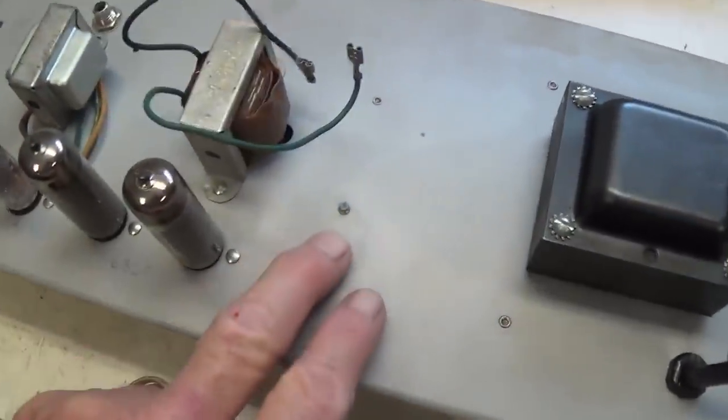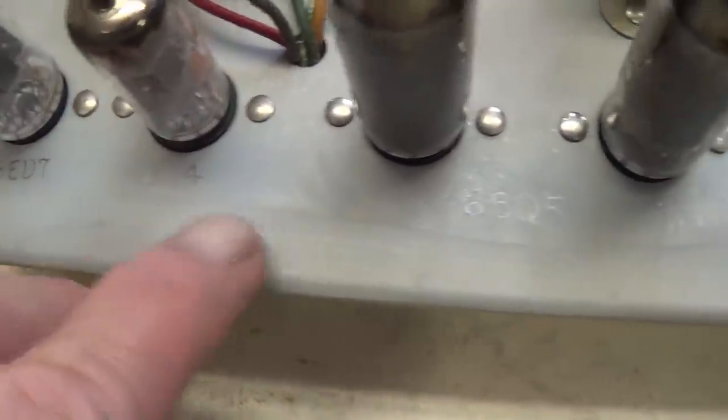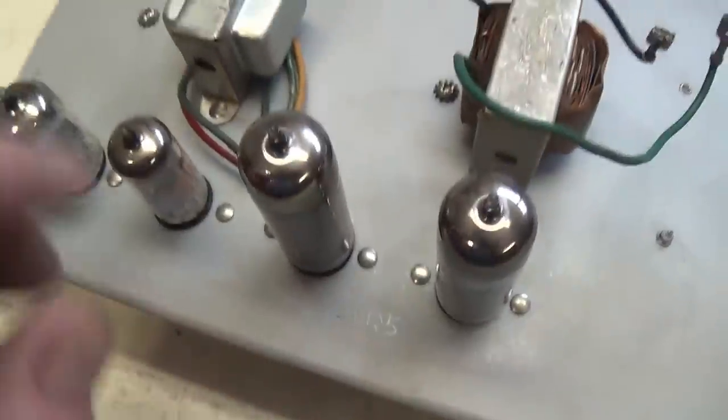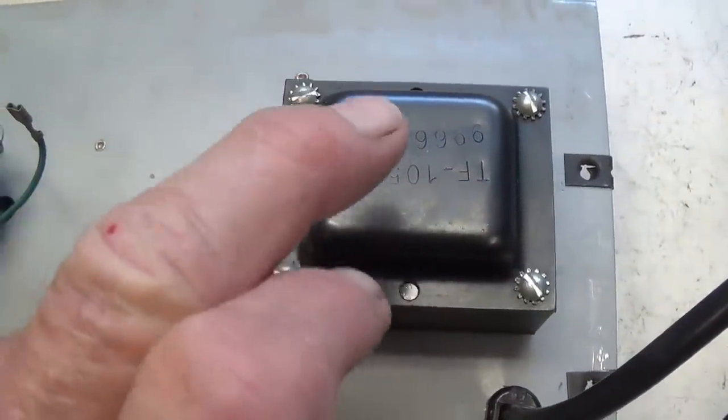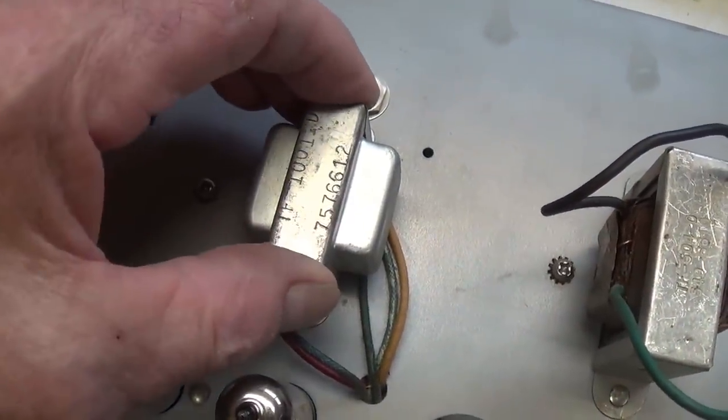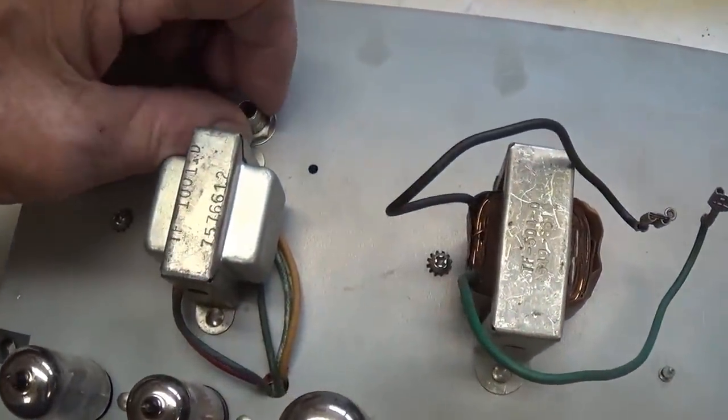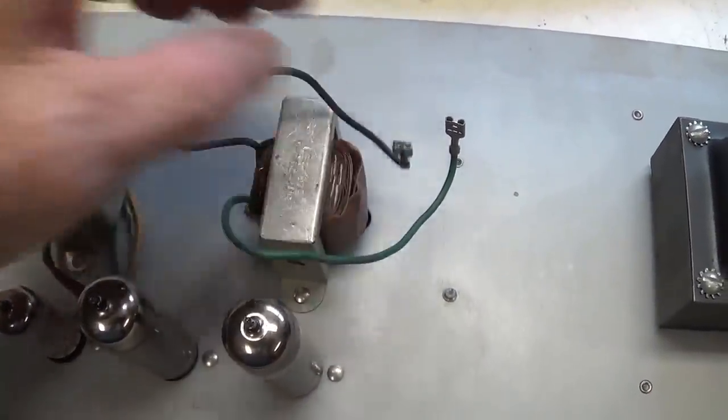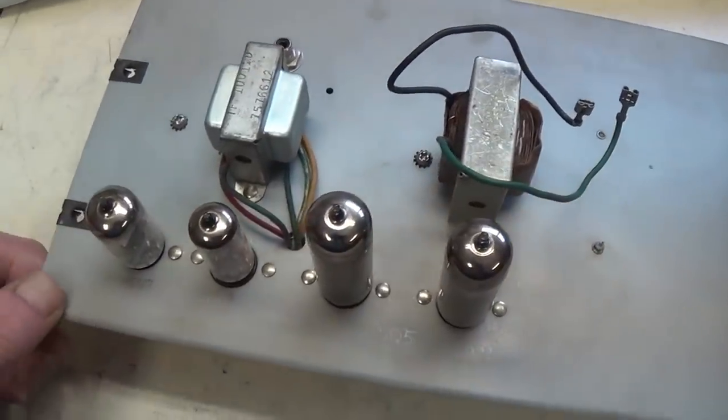And now we have the immaculate chassis out here on the workbench. The tube sockets were unlabeled and I penciled in the identity of the tubes just to help future owners. We have the original part numbers here on the power transformer, the output transformer, and that interstage phase inversion transformer. This is where the foot switch plugs in, and these are the connections for the speaker terminal. It just couldn't be any neater or cleaner.